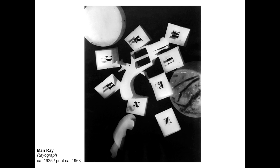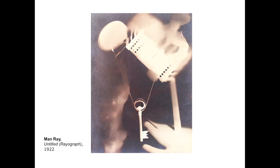One of his contemporaries in Europe, Man Ray, was an American photographer who lived and worked in Paris. Man Ray was a surrealist, and you'll see that in some of his photograms as well, which he called rayographs. Another one of his images — a little less abstract, per se, than Moholy-Nagy.